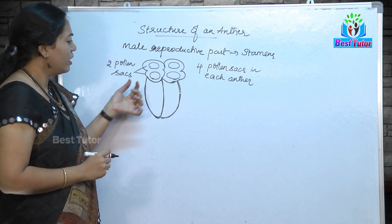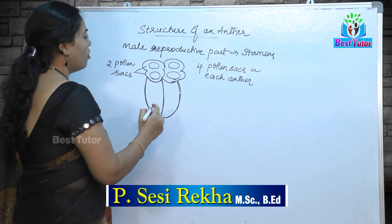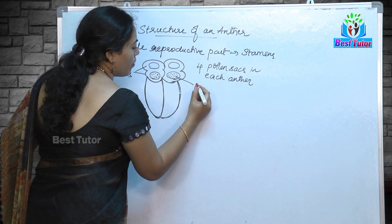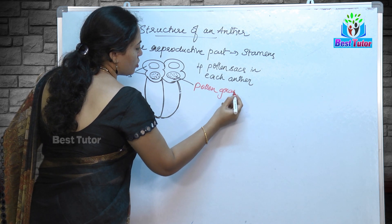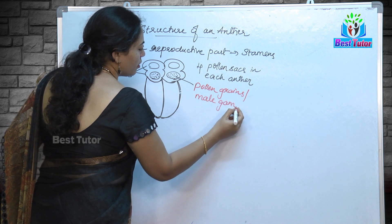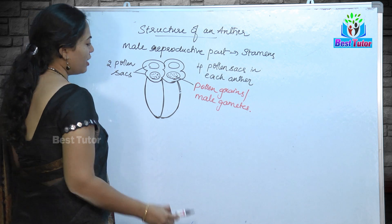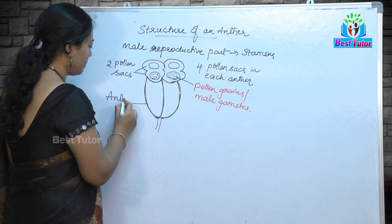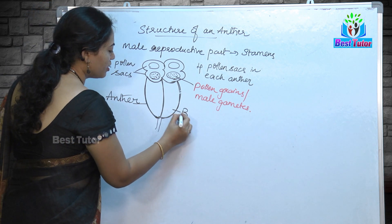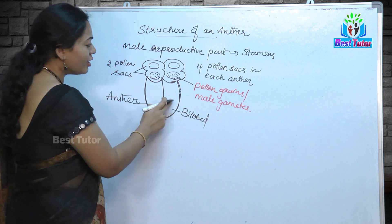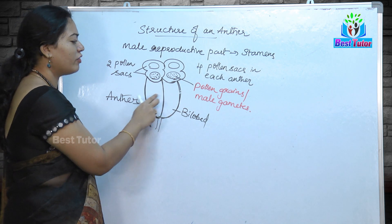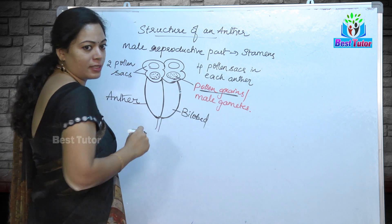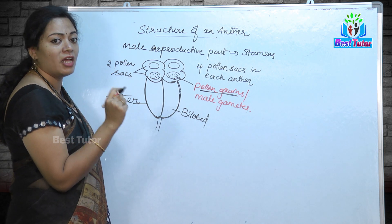These pollen sacks are the ones which are going to produce the male gametes of a flower, known as pollen grains. The stamen structure has a filament with a bilobed anther, and each lobe consists of two pollen sacks — four pollen sacks overall — which are responsible for the production of pollen grains, essential in the pollination process.